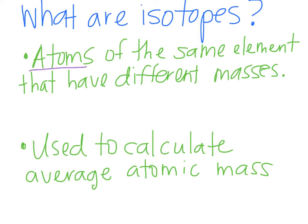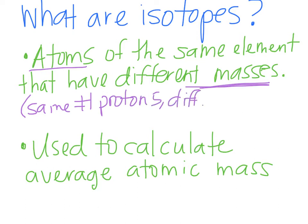The definition is they are atoms of the same element, but they have different masses. So basically what that means, they have the same number of protons. But because their mass is different, that means they have different number of neutrons.